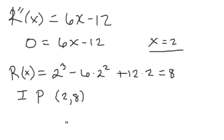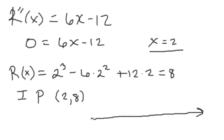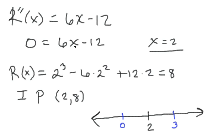Now to find where the function is concave up or concave down, I'm going to draw a number line — just like how we determined if a graph was increasing or decreasing. I'll put 2 on the number line and then pick some test points: 0 and 3. We're going to take these test points and plug them into the second derivative.